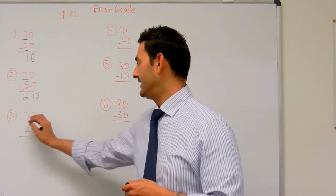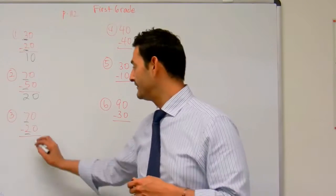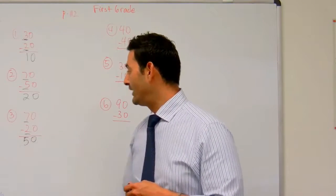70 minus 20, look at the tens place. 7 minus 2, we know that's 5. 70 minus 20 equals 50.